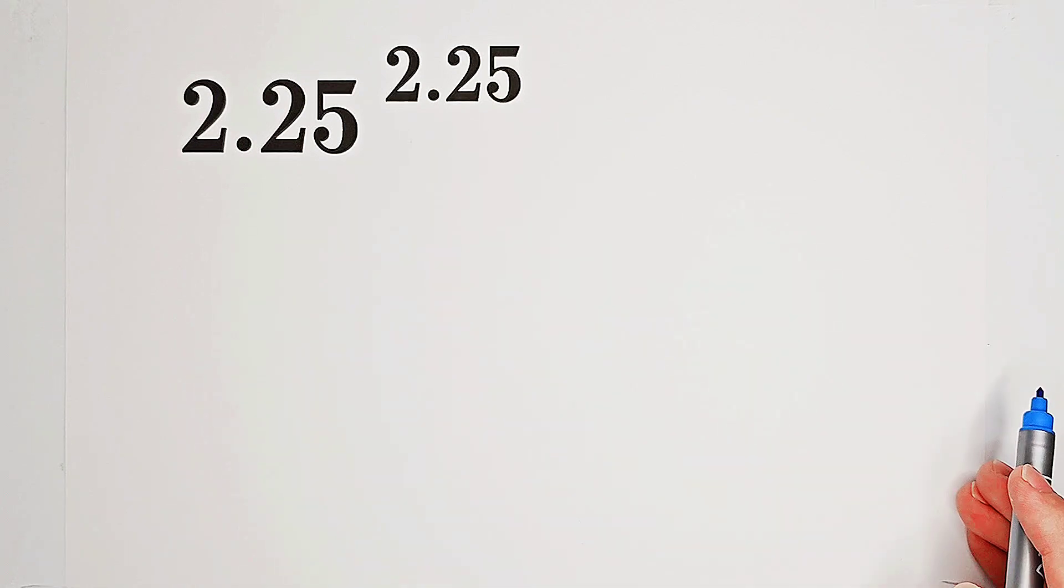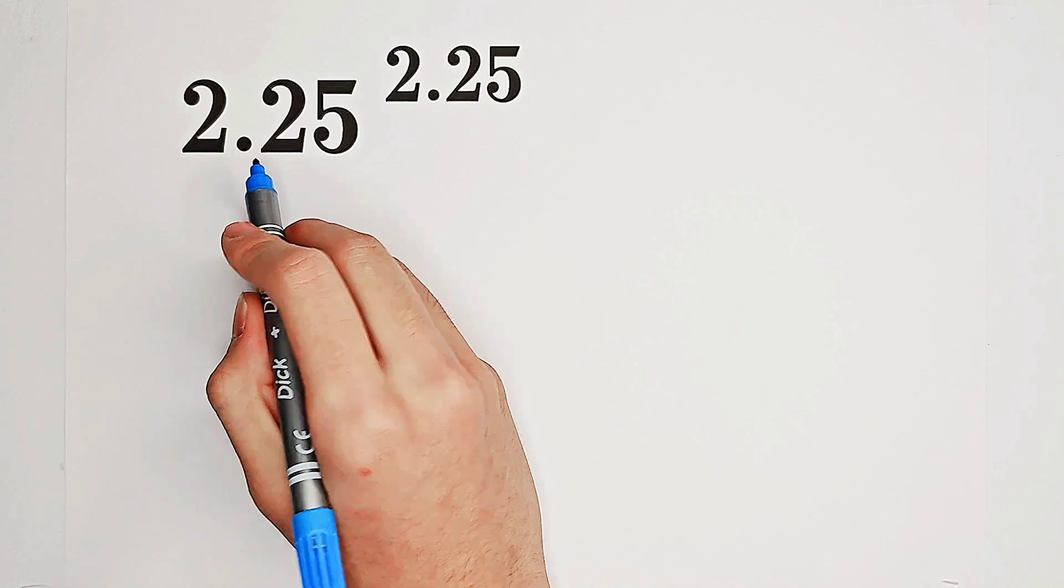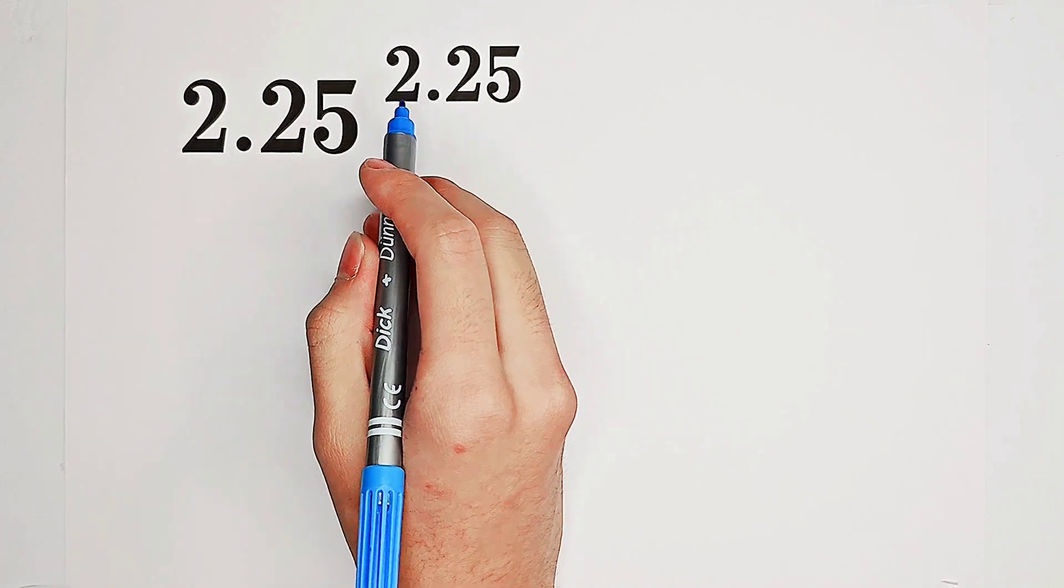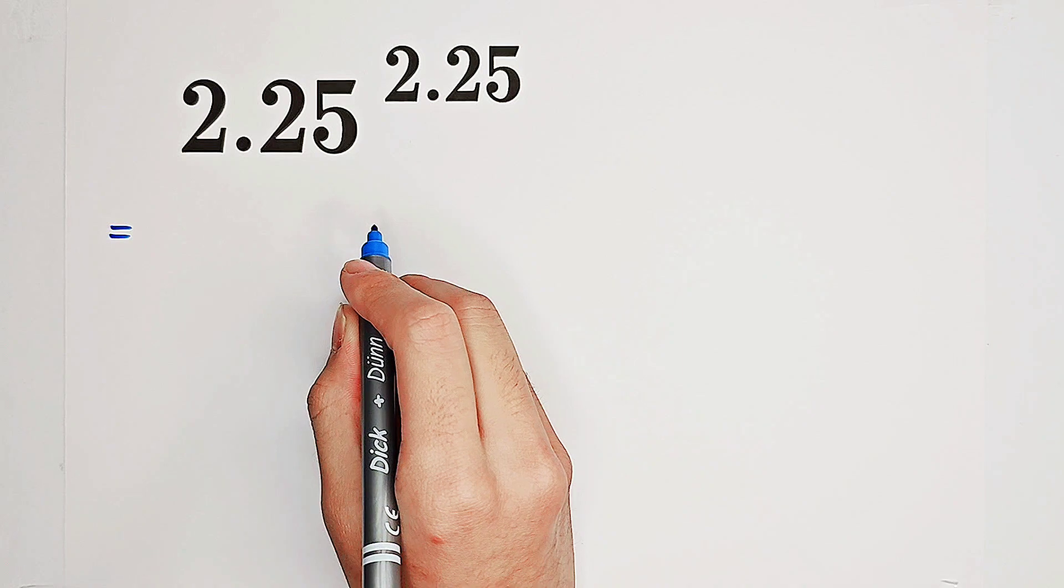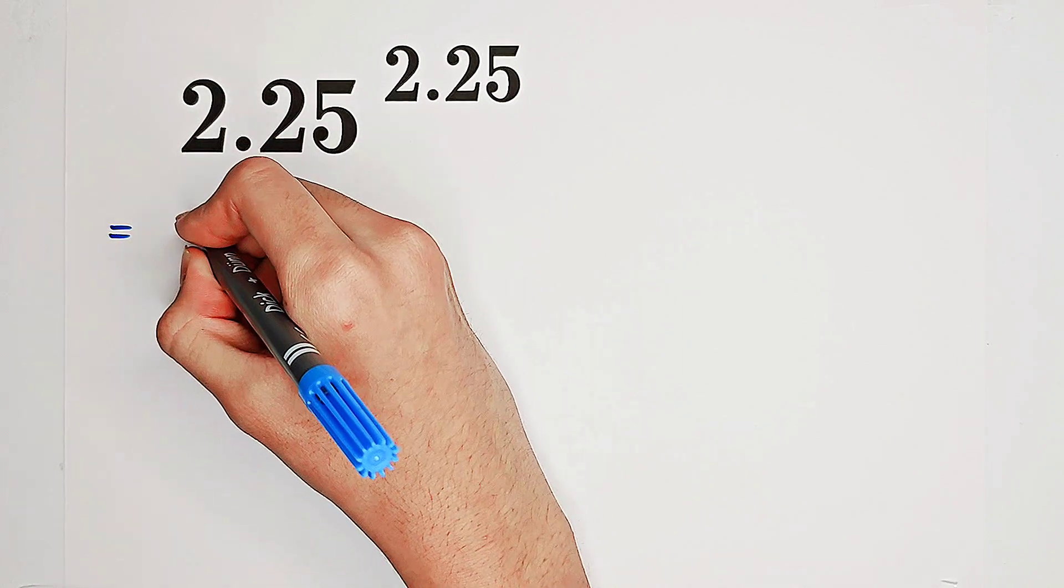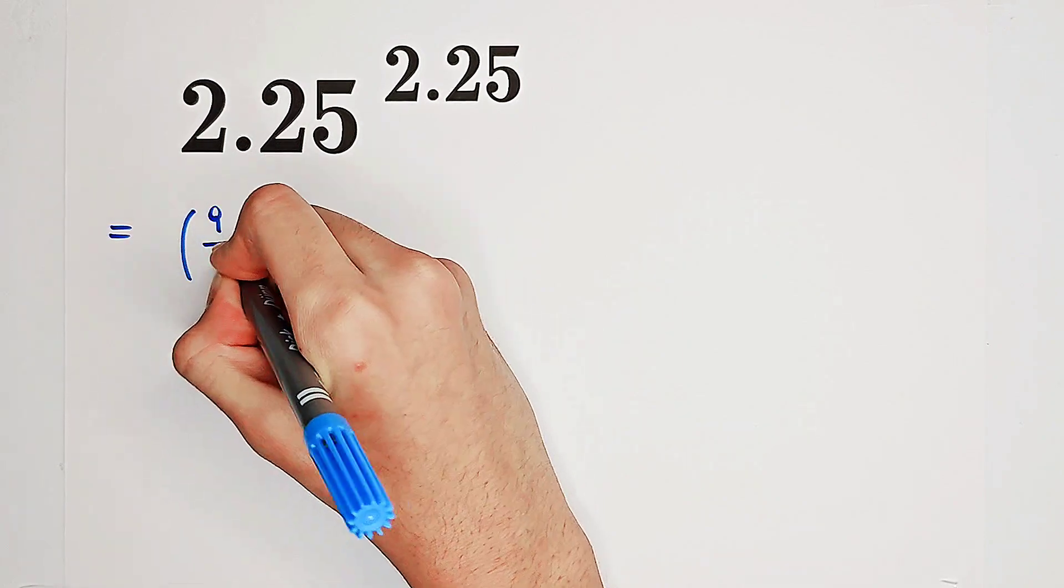Now, firstly, I dislike decimal numbers. So let's write them as fractions. 2.25 is 2 plus 1 fourth. So it's 9 over 4.